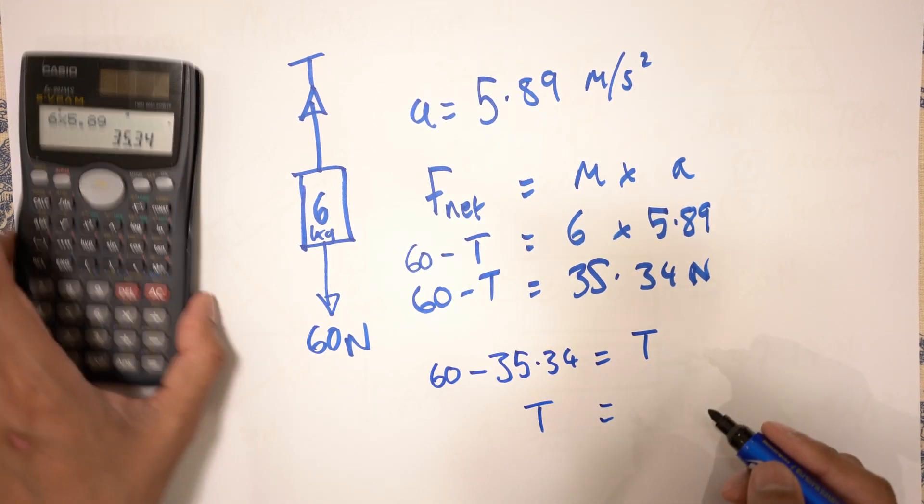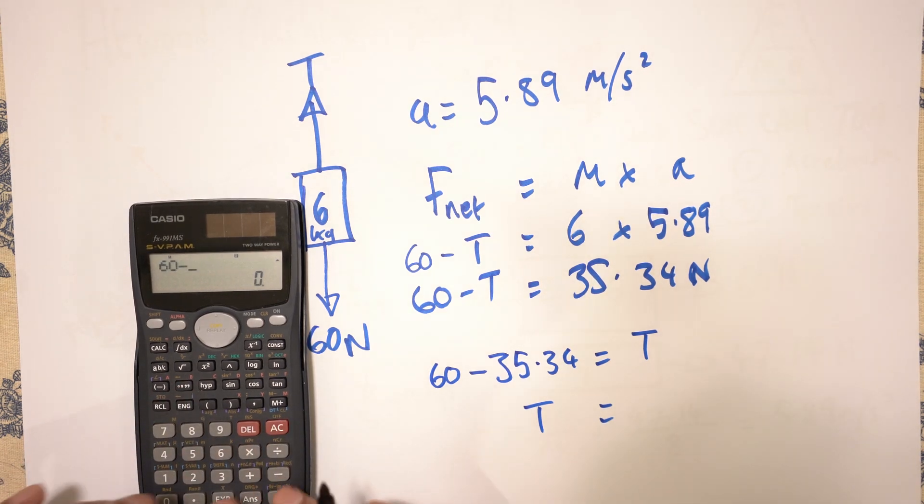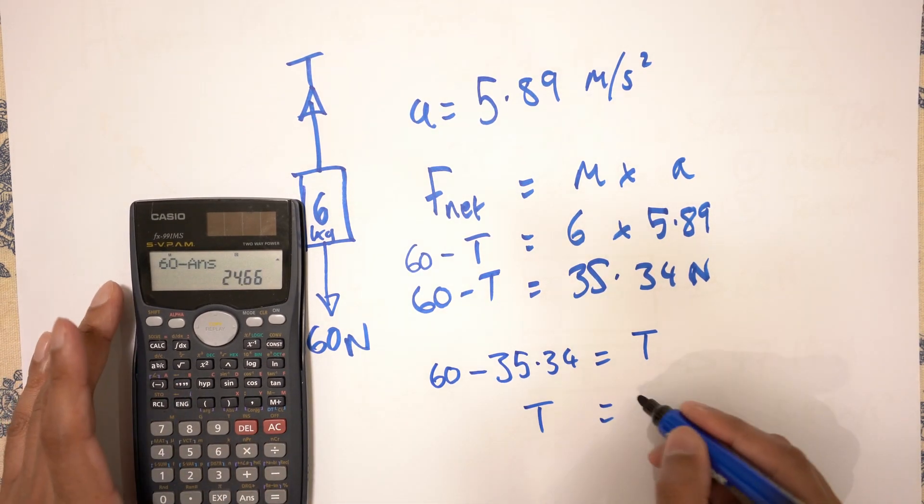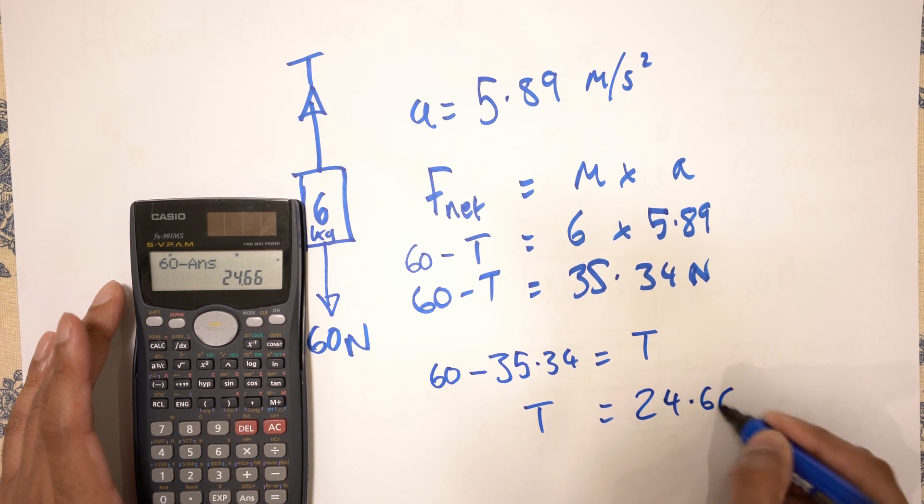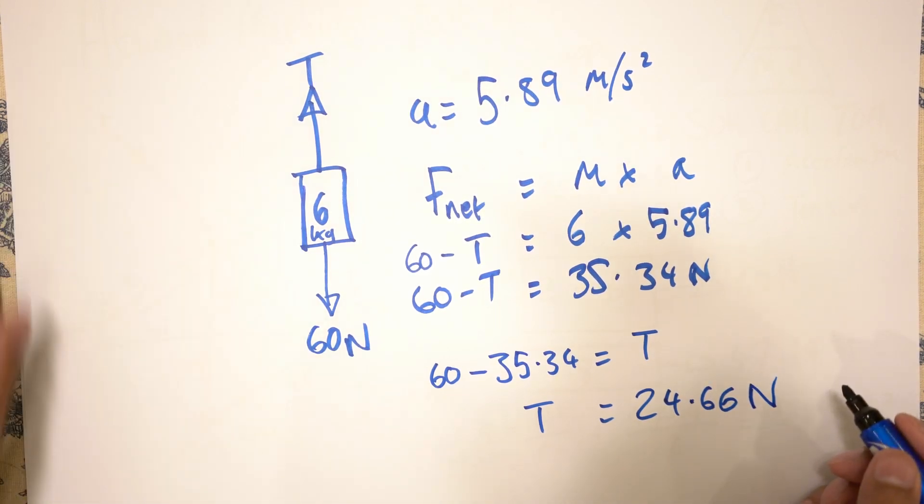So 60 minus 35.34 is equal to T. And so T is 24.66 Newtons. Simple as that. Thank you very much for watching. Goodbye.